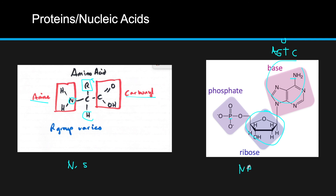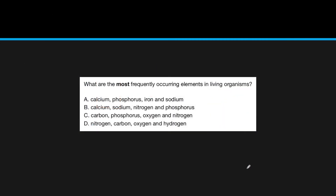You need to remember all the different types of elements being used. A key question: what are the most frequently occurring elements in living organisms? Looking at the four basic molecules — carbohydrates, lipids, proteins, nucleic acids — carbon is in every single one. Oxygen and hydrogen are also in all of them. Nitrogen is common between amino acids and nucleic acids, whereas phosphorus is only found in nucleic acids.